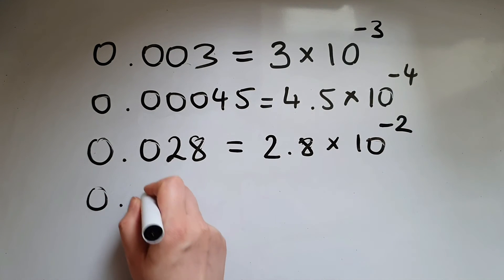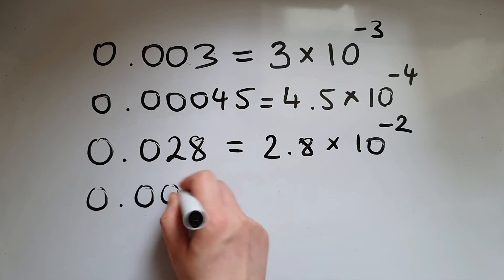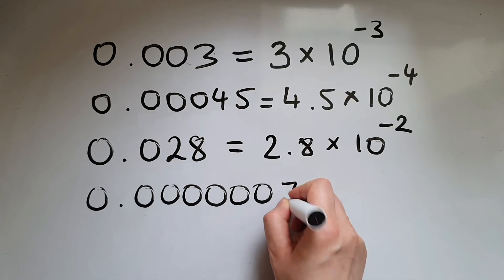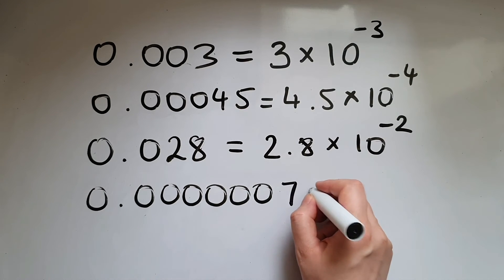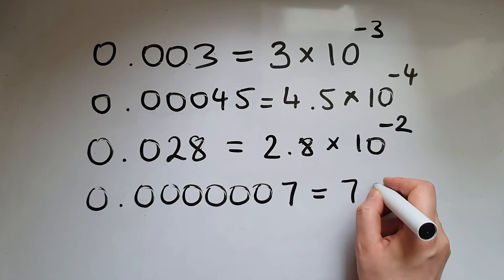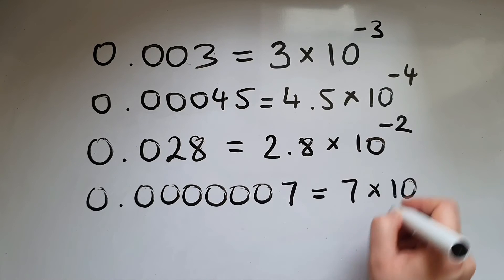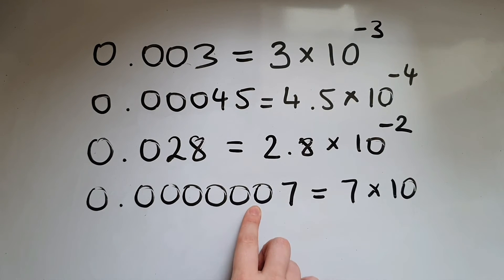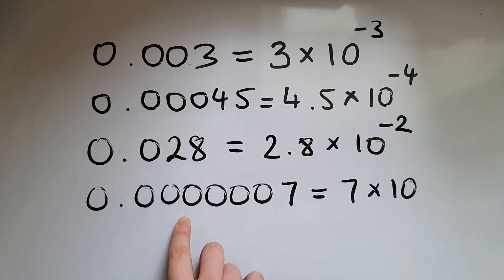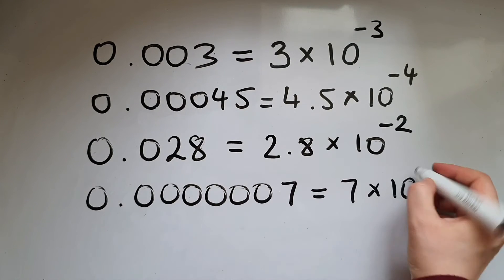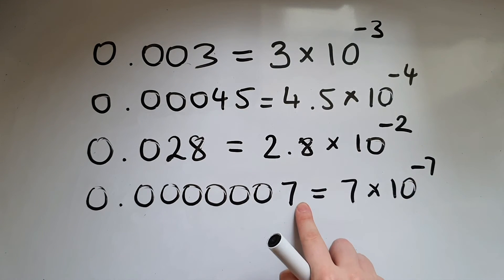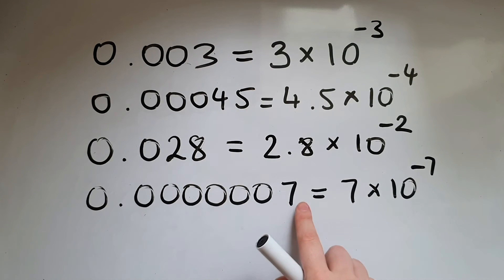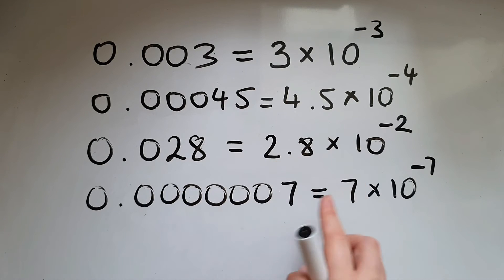0.0000007: 7 is going to be the same as 7 times 10 to the power of negative 7. Why do we start counting from after the 7? Because if it's a whole number, we assume the decimal point is after that number.